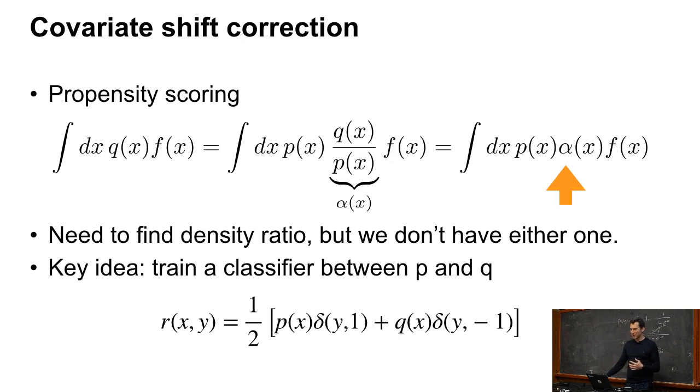And if I just had this function dq, dp, so the ratio of the two densities, this function alpha, then we'd be in really good shape. And I can use a lot of fancy statistical techniques for it, or I can just make my life simple and use tools that I've already built beforehand.